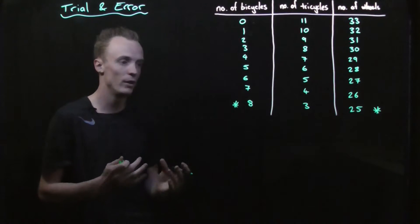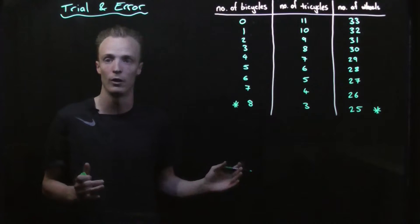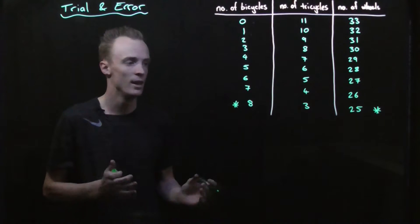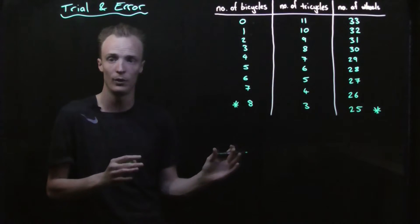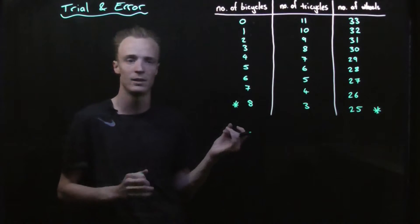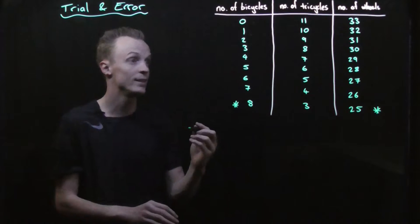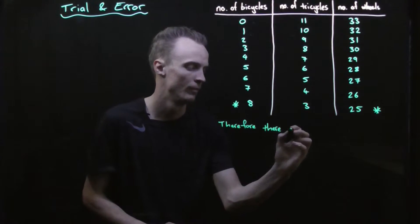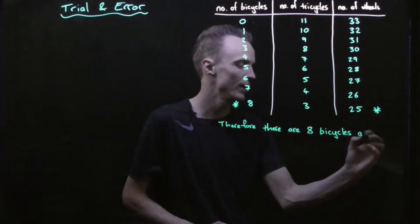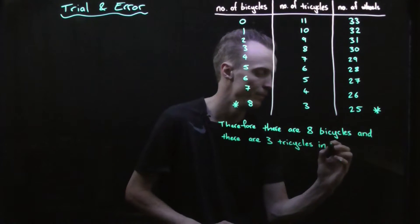Now I'm at the point where I've found the solution. I could continue listing out all the combinations, but I've found the solution — the number of bicycles and number of tricycles that must be in this display window. The solution is there are 8 bicycles and 3 tricycles in the display window.